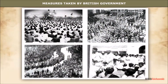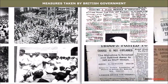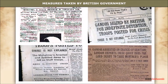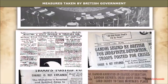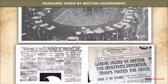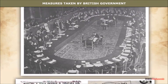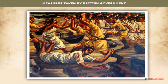Measures Taken by the British Government: The movement spread like wildfire throughout the country, and a worried British government resorted to highly repressive measures to put it down. There were lathi charges, firing, and arbitrary arrests. On 4th May 1930, Mahatma Gandhi and most of the important leaders of the Congress were arrested and put in jail. The British government invited the Congress to participate in the first Round Table Conference to be held in December 1930 at London, but the Congress decided not to participate and continued the civil disobedience movement. An alarmed British government responded with a policy of brutal repression.